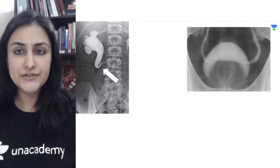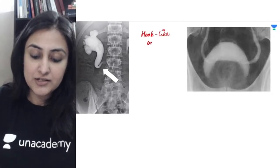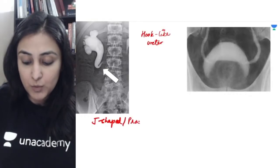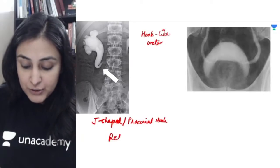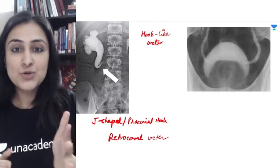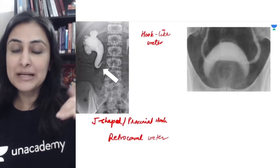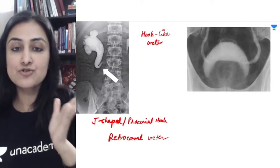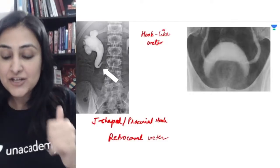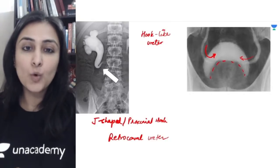Two same appearances but different diseases — same sign. Both have a hook-like ureter but completely different conditions. When you have a proximal hook or J-shaped ureter — described as a proximal hook — this is a retrocaval ureter. The IVC is not formed properly, so the ureter has to go behind it and gets obstructed. This is your proximal hook-like ureter.